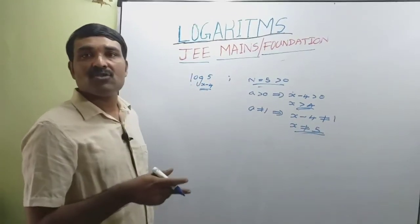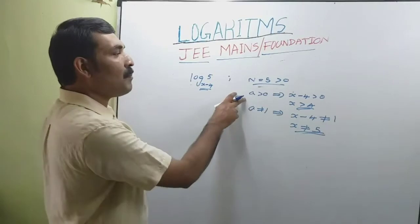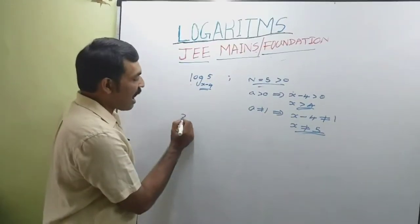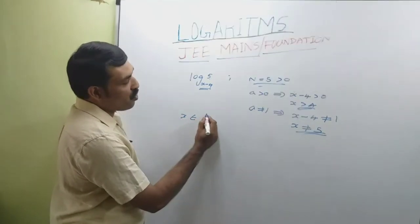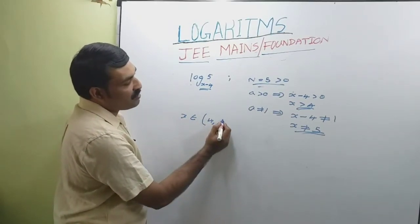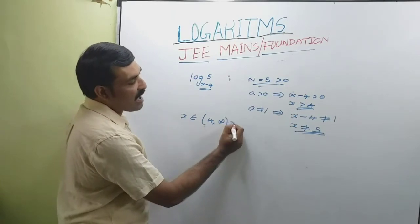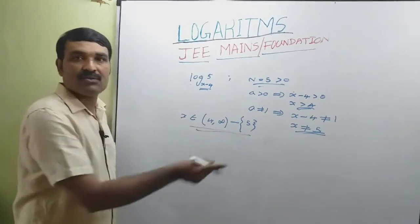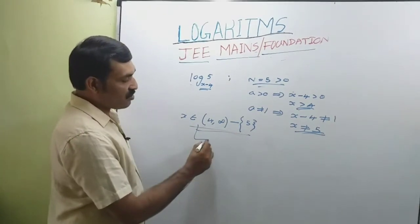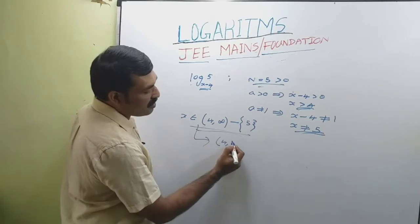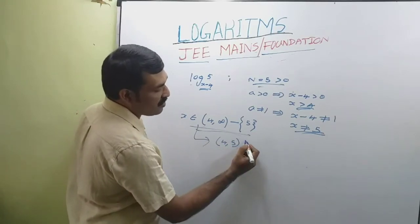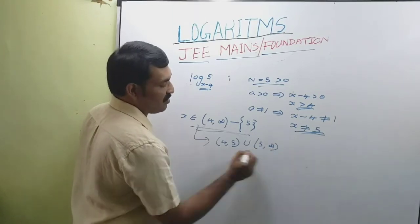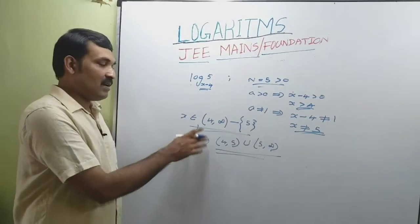From the third condition, x ≠ 5. Combining: x > 4 and x ≠ 5. So x belongs to (4, ∞) excluding 5, which can also be written as (4, 5) ∪ (5, ∞). Both represent the same value.